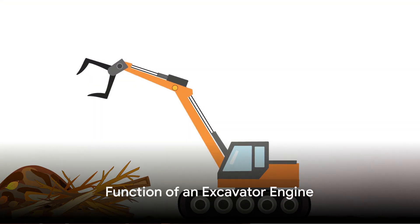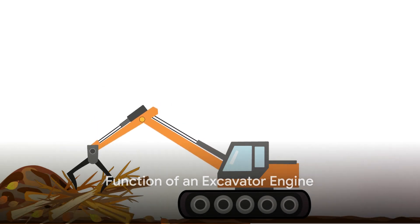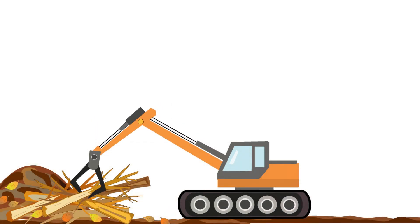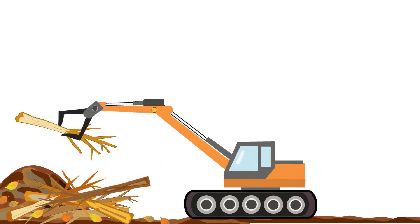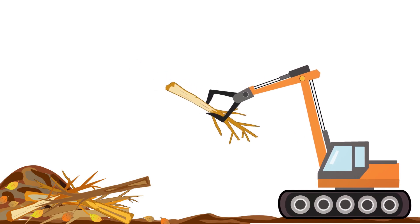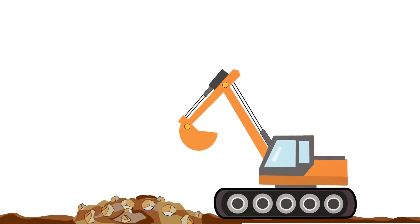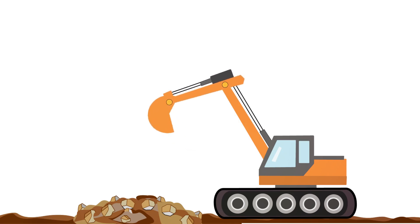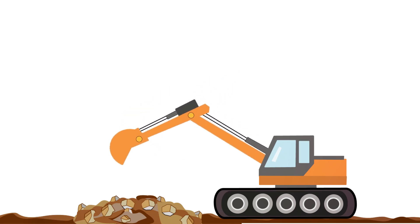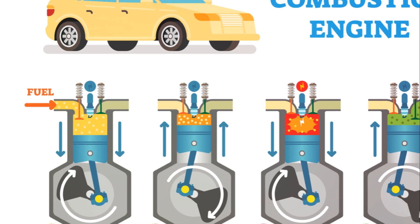Now that we know the structure, let's explore in-depth how an excavator engine works. The engine operates using what is known in the mechanics world as a four-stroke combustion process. This involves four crucial stages that power the engine: intake, compression, combustion, exhaust.